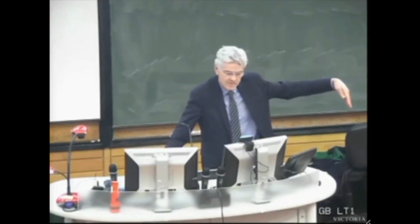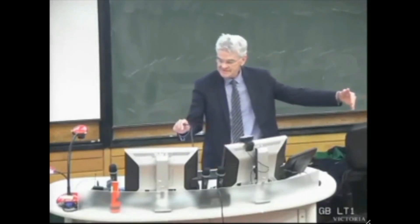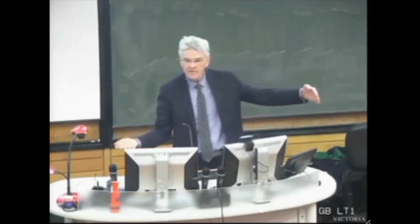The other aspect of this is the so-called crowding out theory — that if the government runs deficits and borrows, it squeezes the financial markets for funds that are diverted away from profitable private sector borrowing, so the deficits crowd out private sector spending. Here's the Bank of England saying the bank therefore creates its own funding in the act of lending — loans create deposits. No real resources need to be diverted from other users in order to lend a customer. In other words, there's no finite supply of funds that the government is competing for, which then penalises other users from accessing — which is the core of crowding out theory and one of the core arguments against governments running deficits.